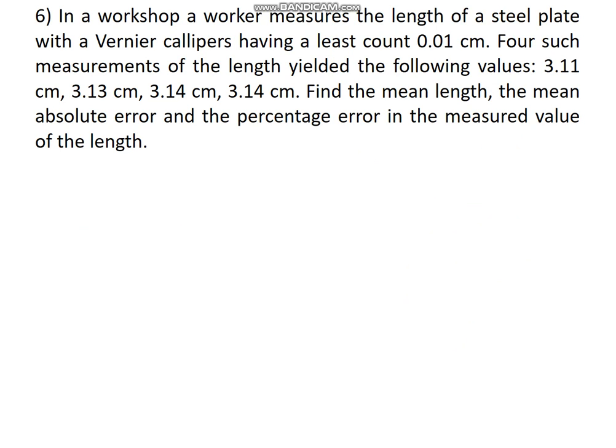In a workshop, a worker measures the length of a steel plate with a vernier caliper having a least count of 0.01 centimeter. Four such measurements yielded the following values: 3.11 cm, 3.13 cm, 3.14 cm, and 3.14 cm. These are the four values. Now, these are all lengths, so what you can do is find out the mean.